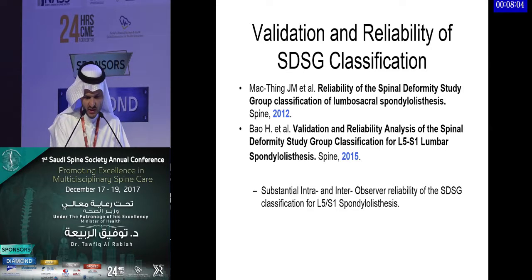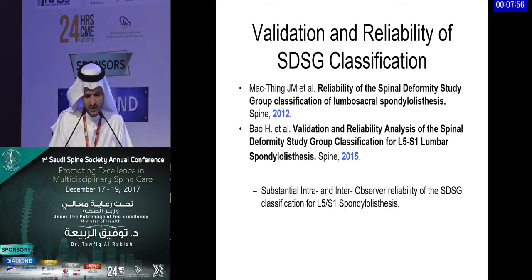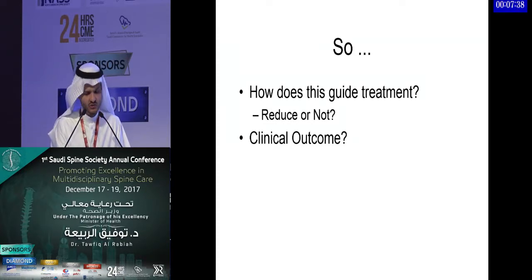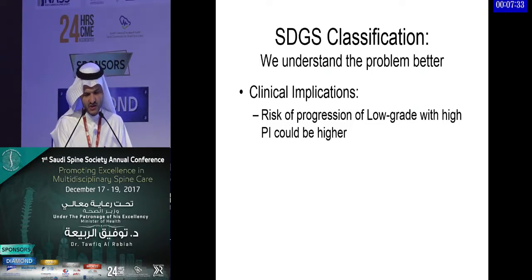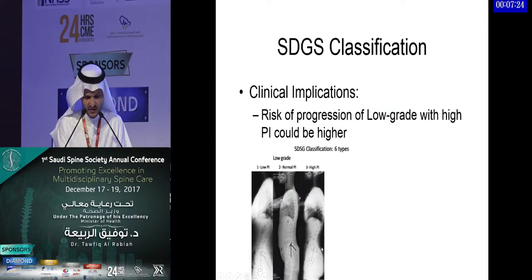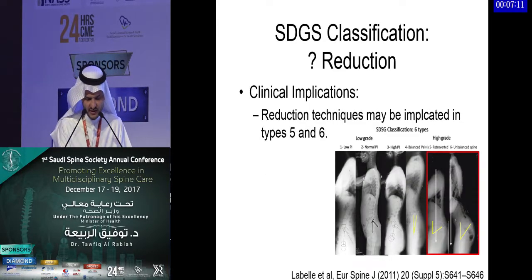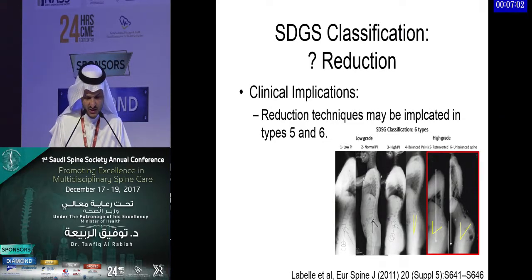Is this classification reliable? A study on the spinal deformity study group classification showed substantial intra- and inter-observer reliability. The degree of spondylolisthesis slip in this classification corresponds to the worst quality of life for those patients. The clinical implications are that the risk of progression of low-grade is higher with higher pelvic incidence. Patients sometimes have a compensatory posture change and compensatory hyperlumbar lordosis, which reaches a limit above which they cannot tolerate and they develop more back pain. Reduction techniques may be implicated in types 5 and 6 of this classification.